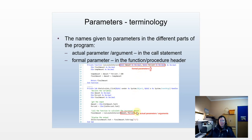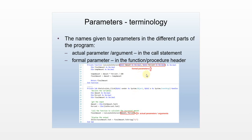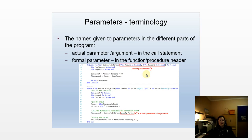Where we're calling the procedure, there's nothing we can do. It's the person that coded the function or procedure that specifies whether formal parameters would be by value or by reference.